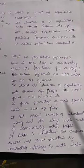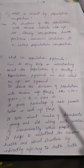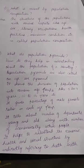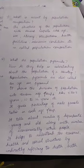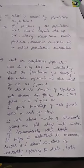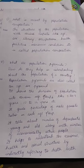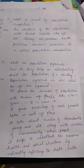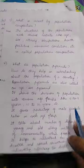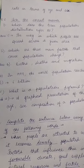What are population pyramids? How do they help in understanding about the population of a country? Answer. Population pyramids are also called an age-sex pyramid. It shows the division of population into various age groups like 5 to 9 years, 10 to 14 years, etc. It gives the percentage of male-female ratio in each age group. It tells about the number of dependents — young and old — along with the number of economically active people. It helps to understand the economic health and social structure by indirectly referring to death and birth rate in terms of age and sex.